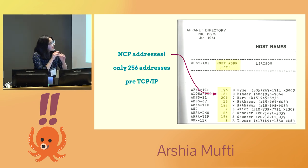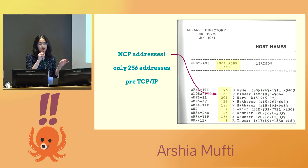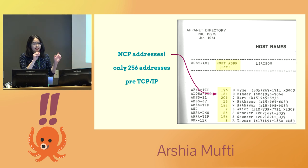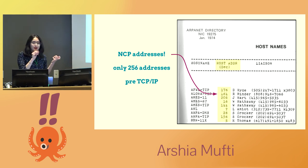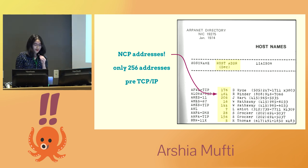Side note: the addresses here are really weird, right? They're not like IP addresses. This is because this was pre-TCP/IP — they used a protocol called NCP. I don't know what NNC stands for, but the P stands for protocol. And the address space of this protocol was only 256 because I guess they didn't think they needed addresses that were more than that.